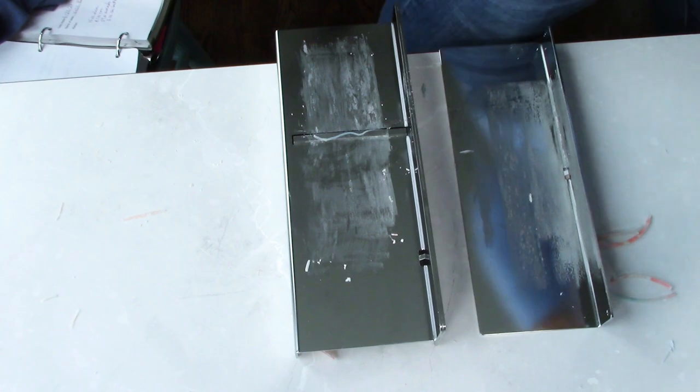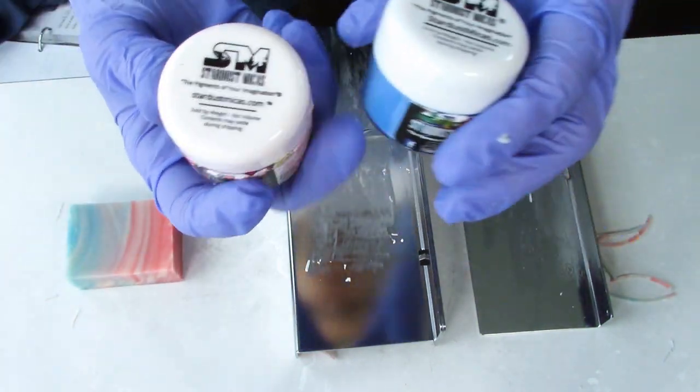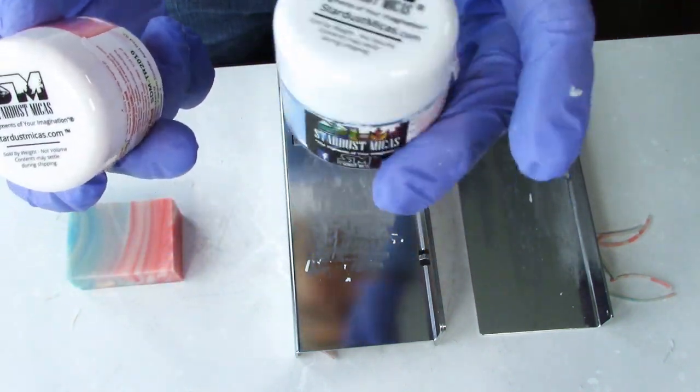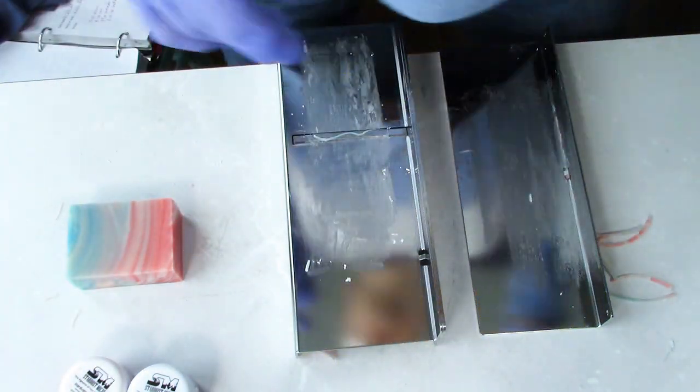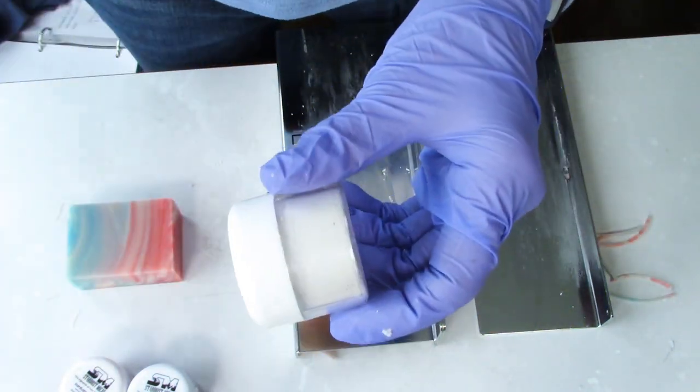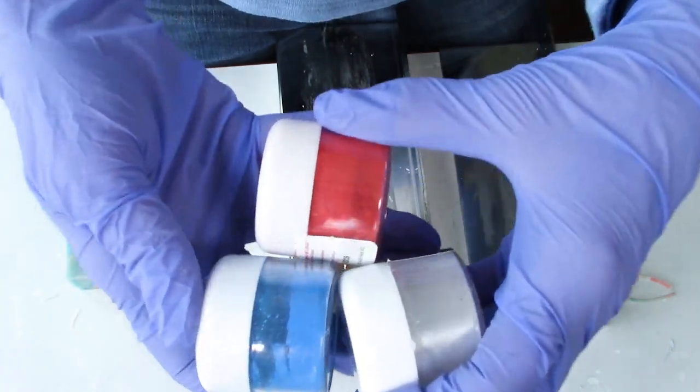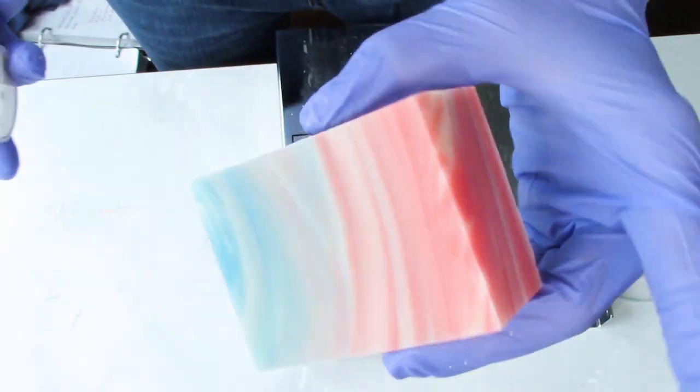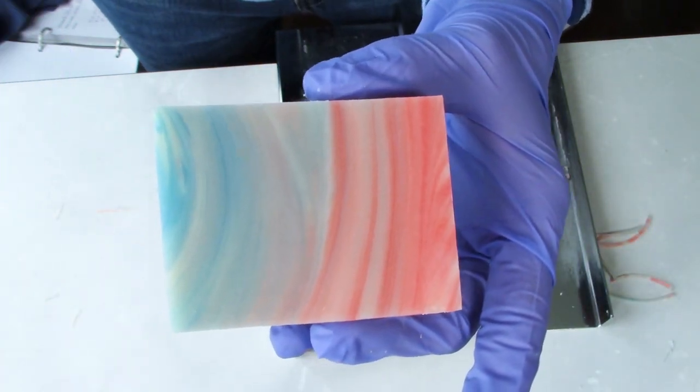So, our sponsor this month is Stardust Micas. And so, I used the Truly Red and the Cosmic Blue and then also, bright white. So, this is what the colors look like in the containers. And this is what the soap looks like. So pretty.